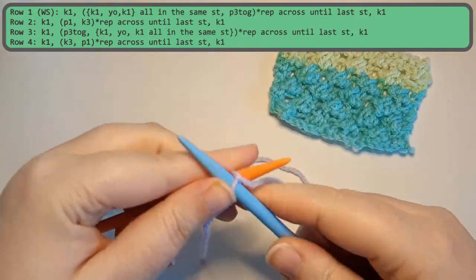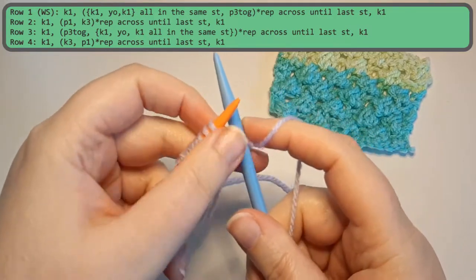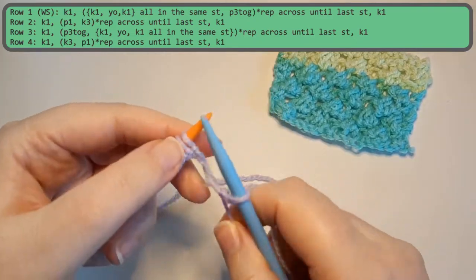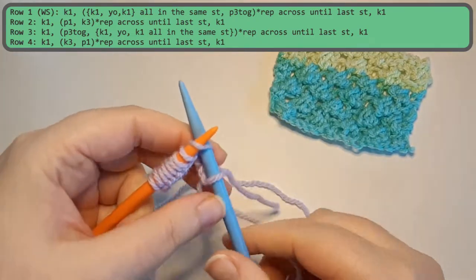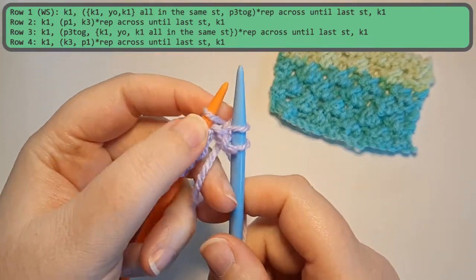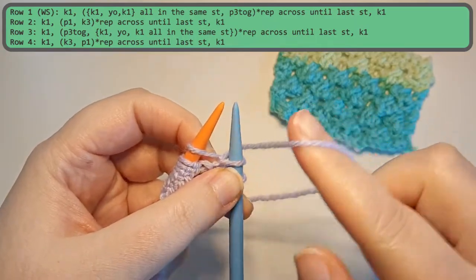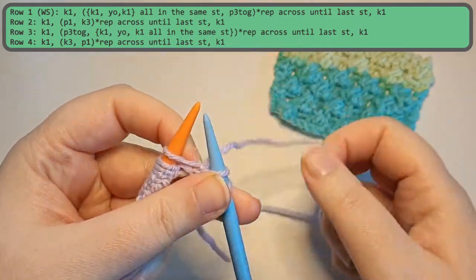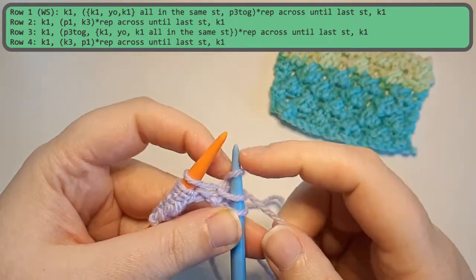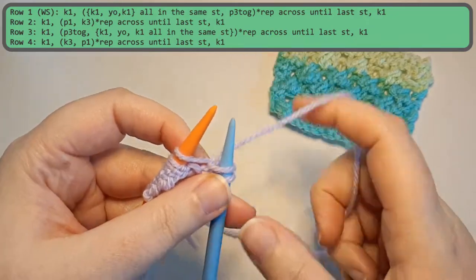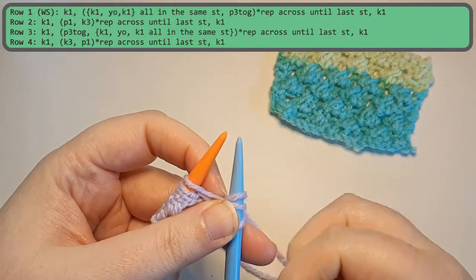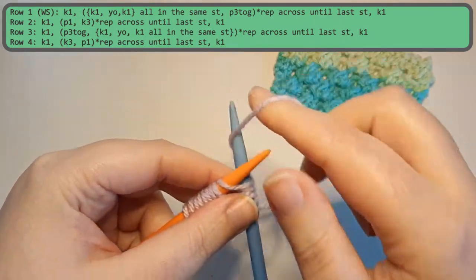So we are going to start off by a knit and then our repeat is going to be knitting one, yarning over, and knitting one in the next stitch. So it's a knit. And then when you yarn over, you want to make sure that you yarn over clockwise. Because counterclockwise it won't stay in place. So you got to go clockwise. And then you're going to insert your needle again into the same stitch and knit.